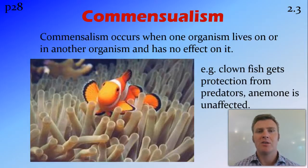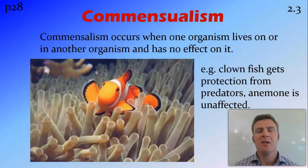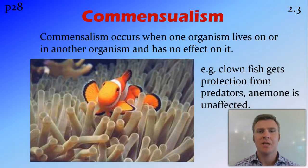The next one under symbiosis is commensalism, where one organism lives on or in another but does not have any effect on it — so rather than causing harm like in parasitism, it has no effect. A good example is the clownfish, which lives among the tentacles of the sea anemone. The sea anemone has poisonous tentacles so other fish can't get near it, but the clownfish has a coating on its scales that protects it from being stung, giving it protection from predators. However, this doesn't affect the sea anemone in any way — it neither benefits nor harms it.